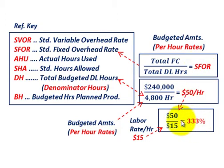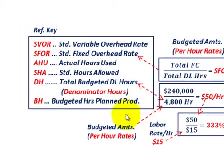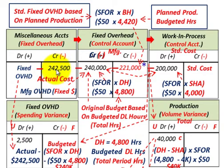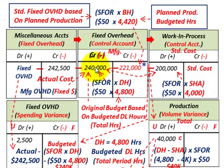Now let's move to our problem. We'll start with actual fixed overhead costs for the period at $242,500.